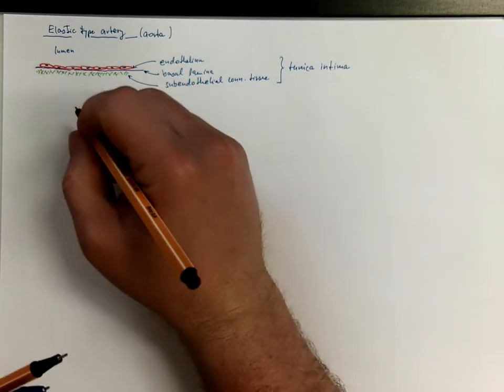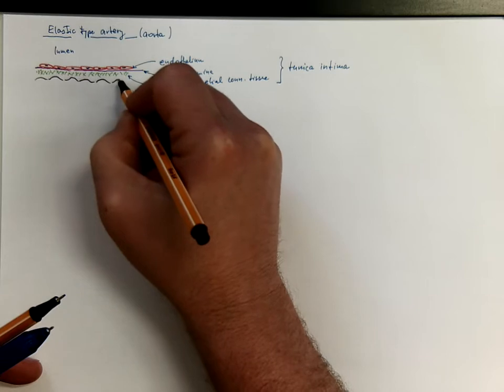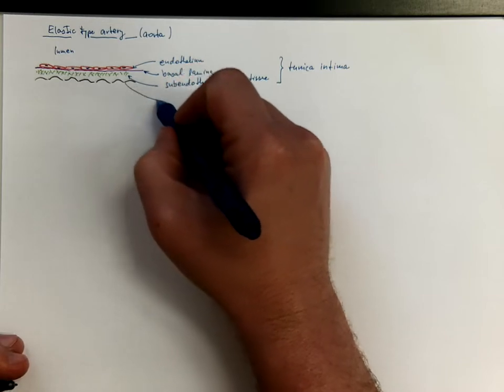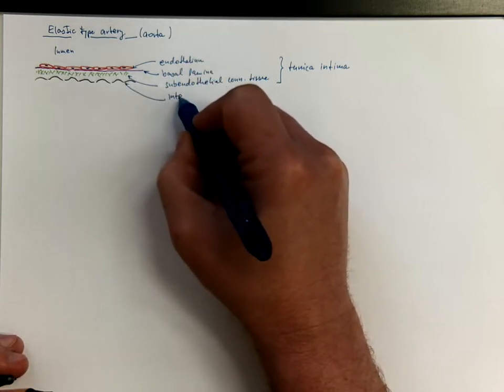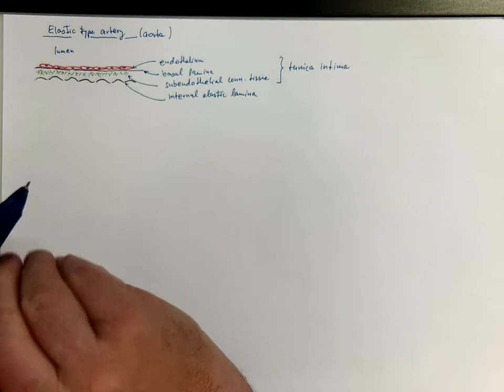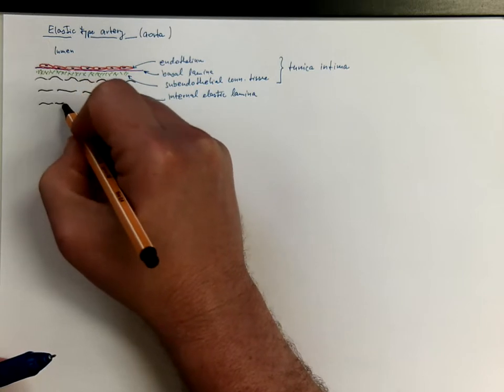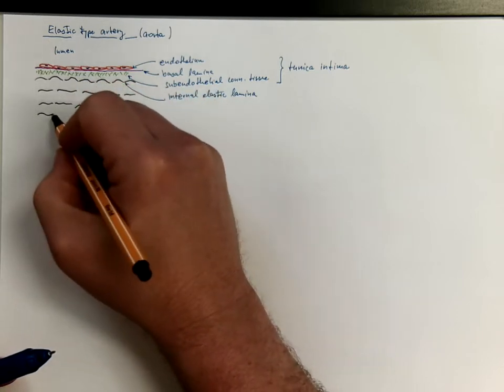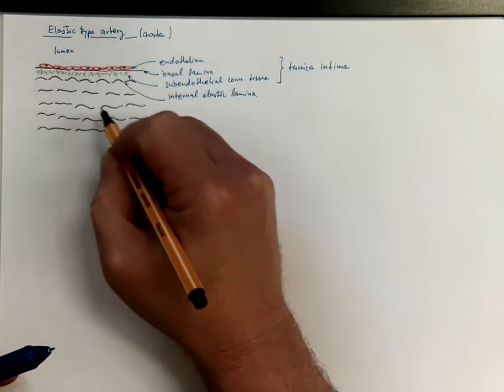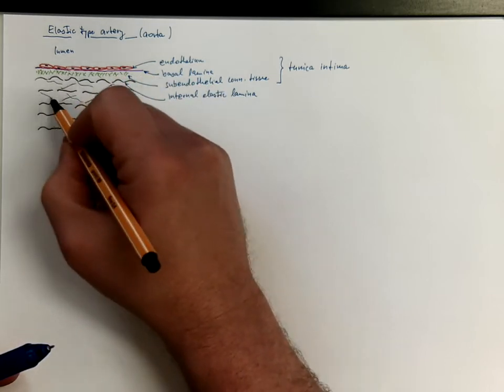The next layer will be the tunica media, the conventional border. Here is the first layer of elastic membrane, which is called the internal elastic lamina. And then we have a whole series of repeating elastic membranes that have openings called fenestrations, even connected with other elastin bridges.